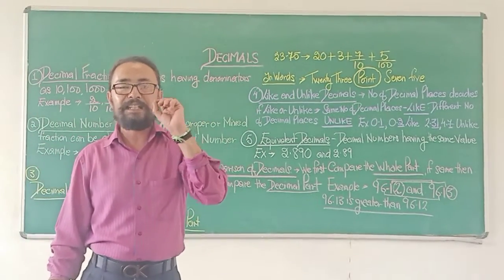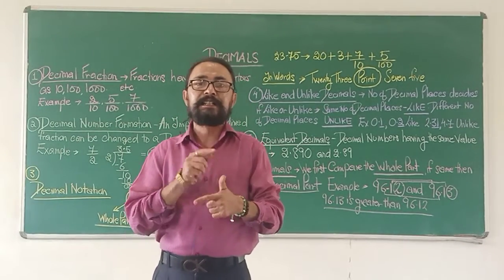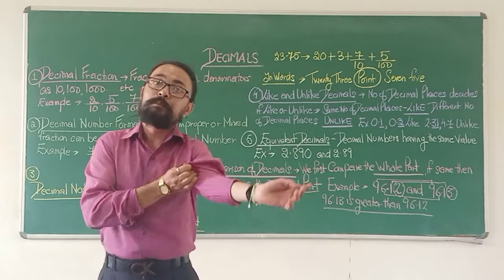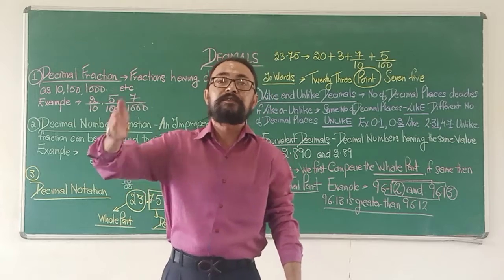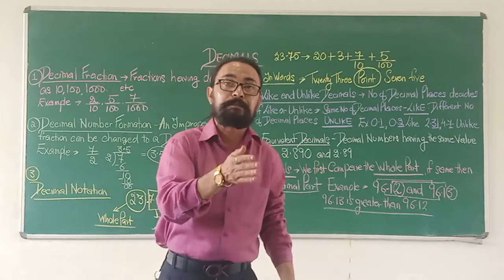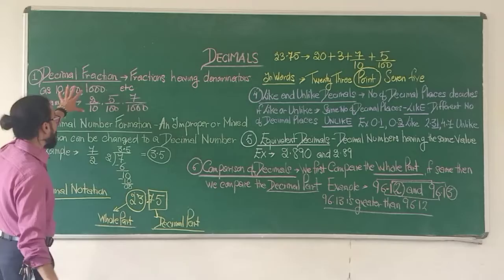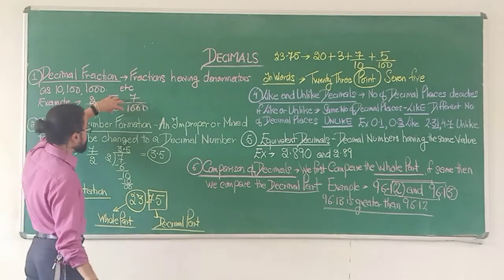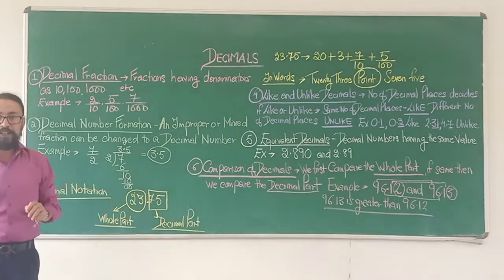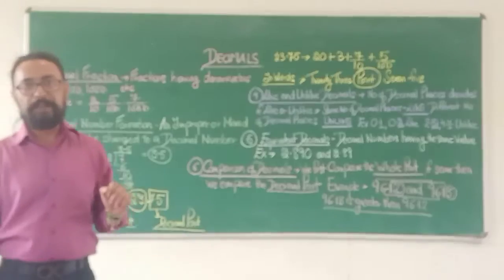A fraction that has its denominator as 10, 100, 1000, 10,000, lakhs, 10 lakhs, crores, 10 crores — all in powers of 10, not multiples of 10. Multiples of 10 are 10, 20, 30, 40, 50, 60, 70. Powers of 10 means 10 multiplied by 10, multiplied by 10, and so on. So when I have a fraction with 10, 100, or 1000 as a denominator, they are called decimal fractions, and they form decimal numbers.